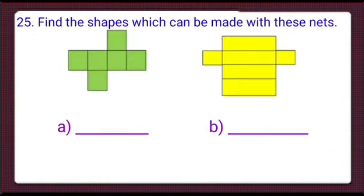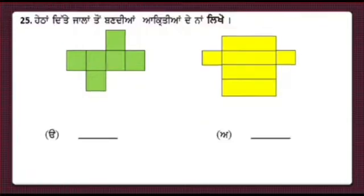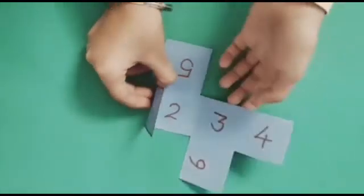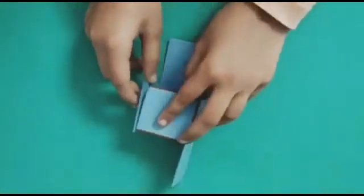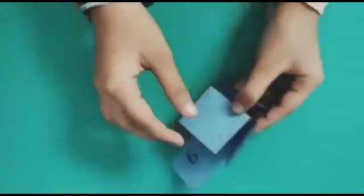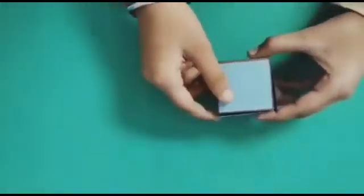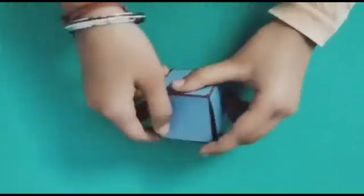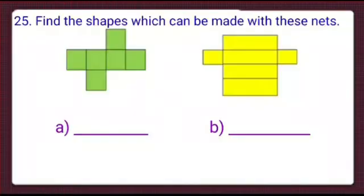Now it is question number 25: find the shapes which can be made with these nets. In part A, we can see a green net where all the parts are squares. This is a paper net and we will fold the square parts and observe the shape we get. On folding, we get a cube — a 3D shape.